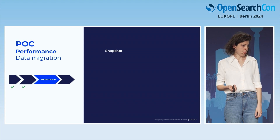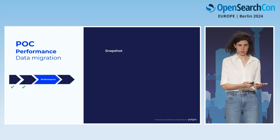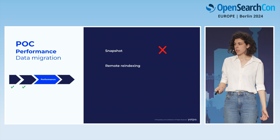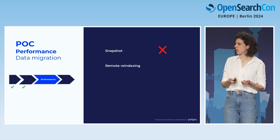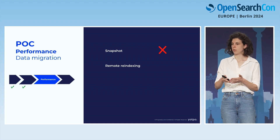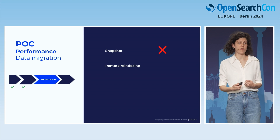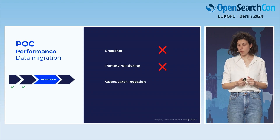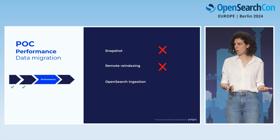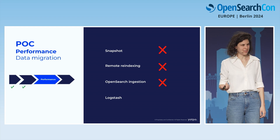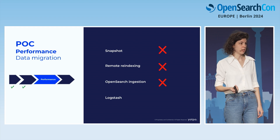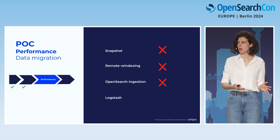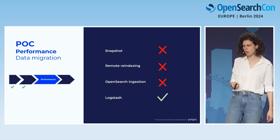For migration tools: Snapshot was ruled out due to version incompatibility — we couldn't restore a snapshot from 7.16. Remote re-indexing was ruled out because it requires digesting data to public endpoints, and we have personal shopper information we couldn't expose. OpenSearch ingestion (managed data prepper) doesn't support Elasticsearch as a source. So we chose Logstash — the official recommendation in OpenSearch documentation for migration from Elasticsearch with versions higher than 7.11.